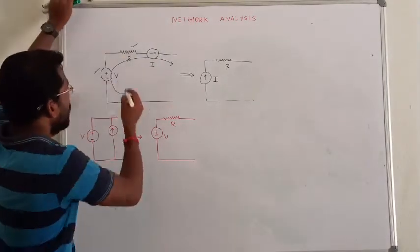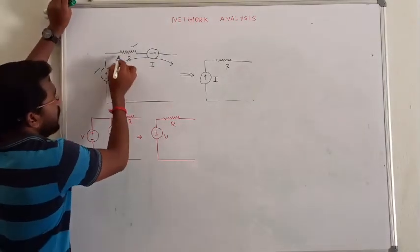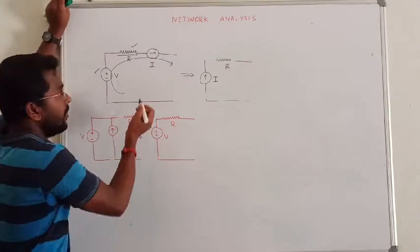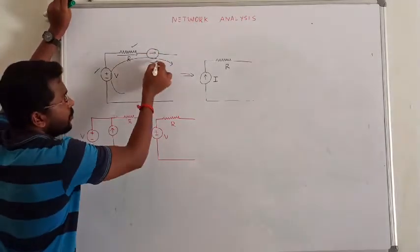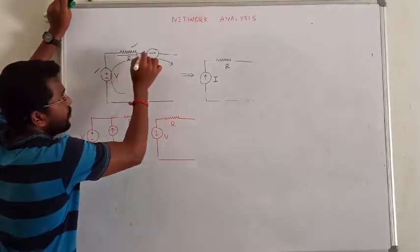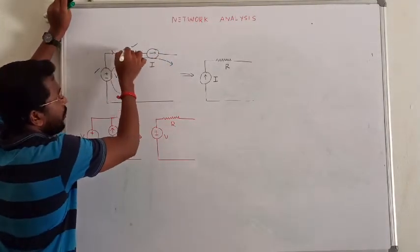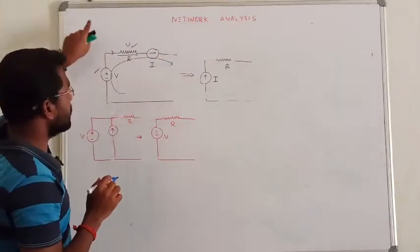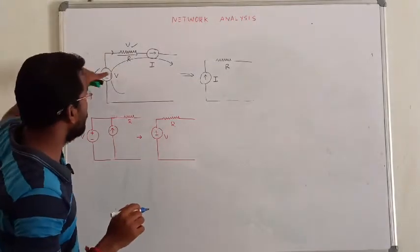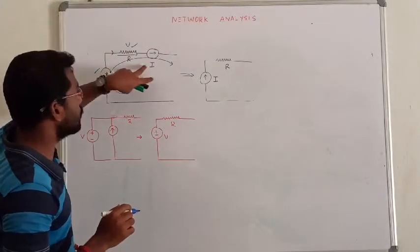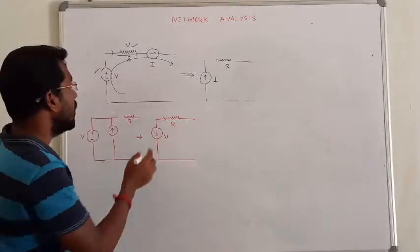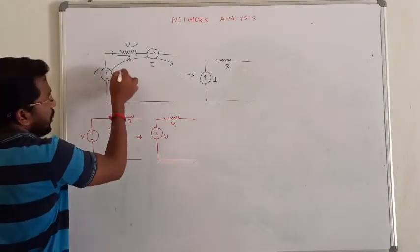In a series circuit, the voltage and resistance are the same. I am going to change the current source. The current source voltage is the same. So in a series circuit, if the current source is the same, you can replace it.